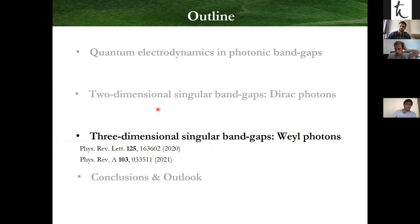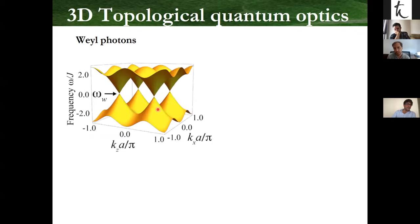I now want to discuss Weyl photonic environments in 3D. Weyl photonics is a 3D analog of Dirac points — also singular band touchings that are linearly dispersing. They occur when you have, for example, a cubic lattice and break either inversion symmetry or time-reversal symmetry. They have been observed quite recently in coupled microwave resonators in complex structures.